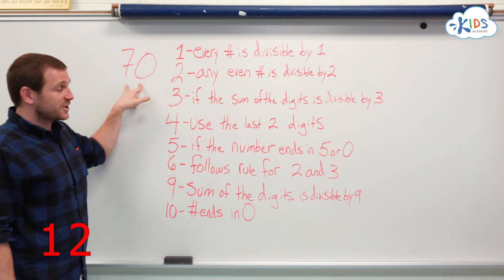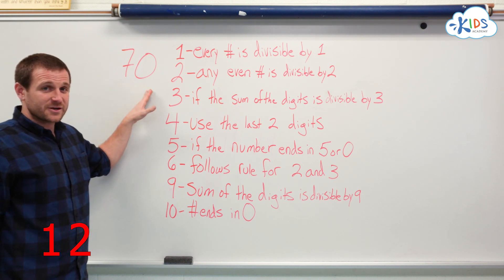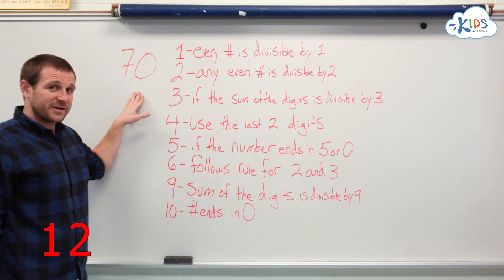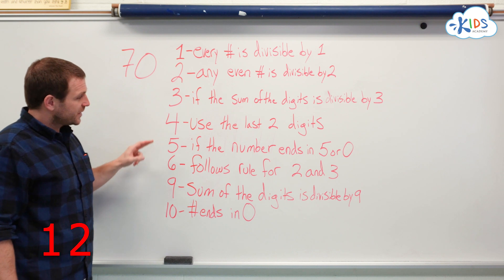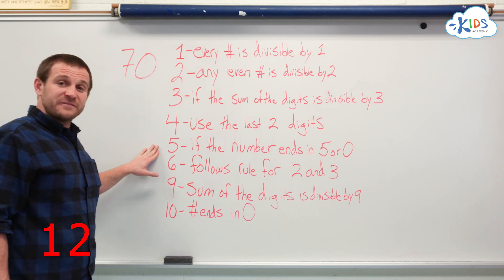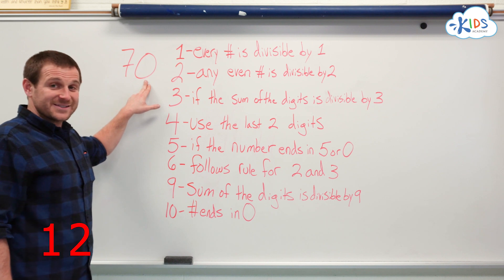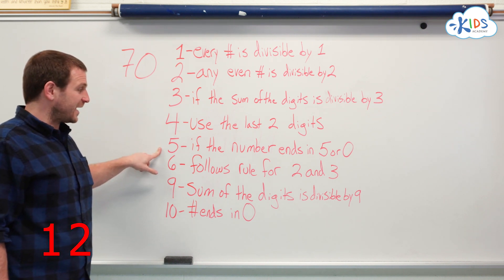Using the last two digits, 70, 7 and 0, is not divisible by 4. So the whole number is not divisible by 4. Number 5. Does the number end in 5 or 0? It does end in a 0, so it is divisible by 5.